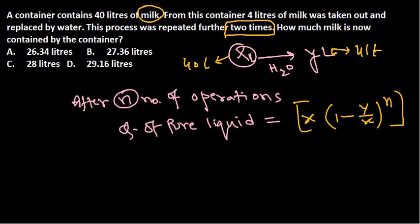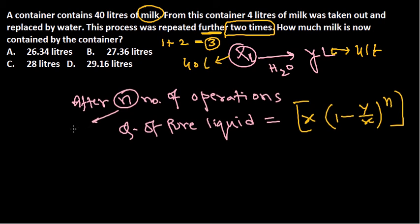Initially, 40 liters of milk was there; 4 liters taken out and replaced by water, leaving 36 liters of milk and 4 liters of water. Then again 4 liters of milk taken out and 4 liters of water put inside. The process was done the first time, and then further repeated two more times — emphasize the word 'further' — so ultimately the number of times it was done is three.